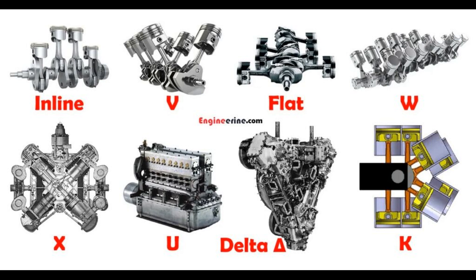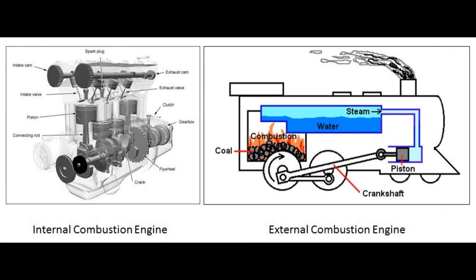5. Type of ignition. On the basis of ignition, engines are classified as spark ignition (SI) engine and compression ignition (CI) engine. In a spark ignition engine, a spark plug fitted at the engine head produces a spark after compression, igniting the air-fuel mixture. Petrol engines are spark ignition engines. In a compression ignition engine, there is no spark plug; the fuel is ignited by the heat of compressed air. Diesel engines are compression ignition engines.